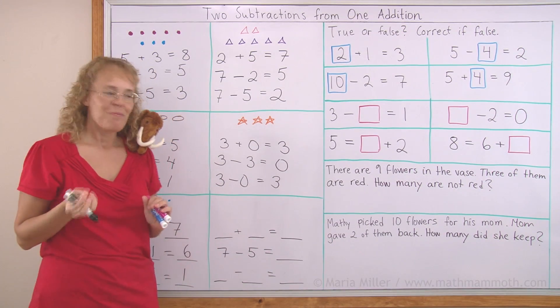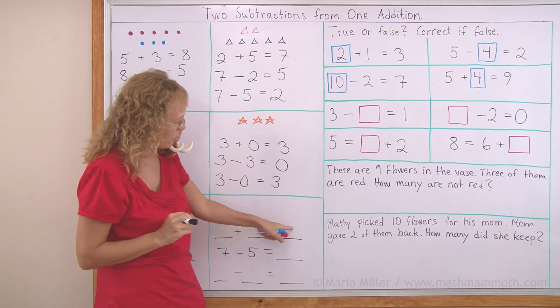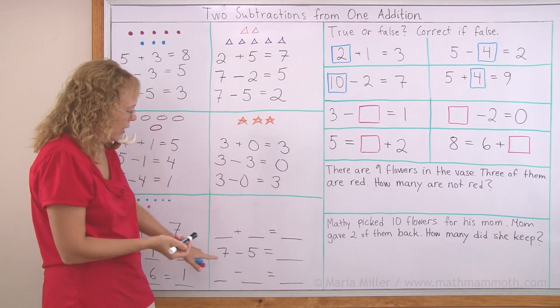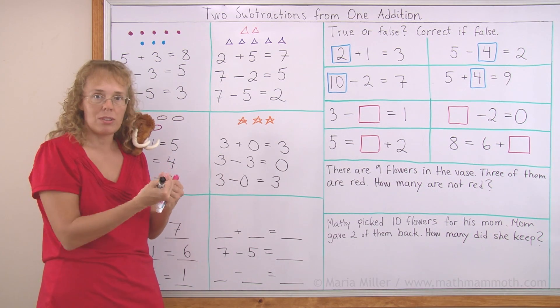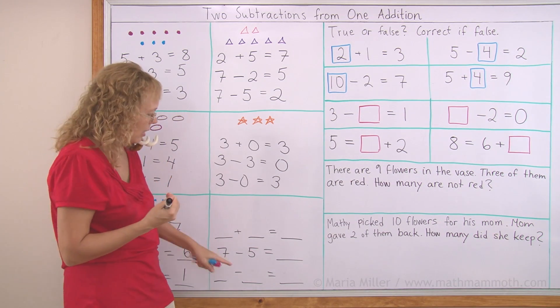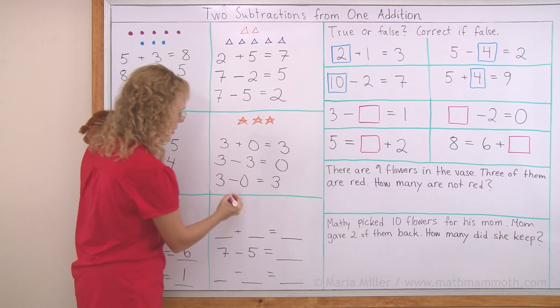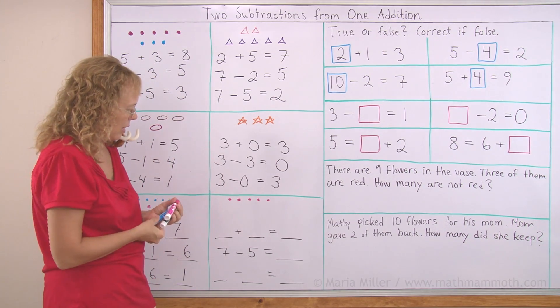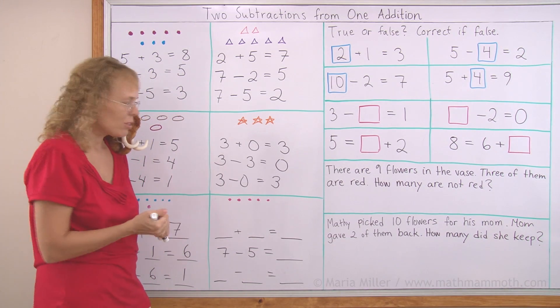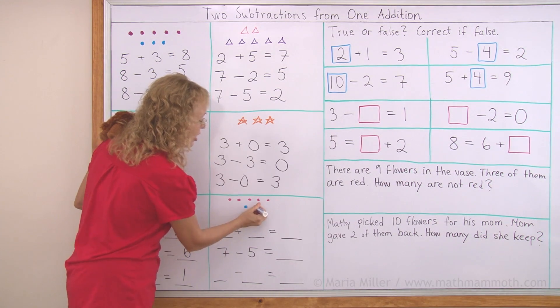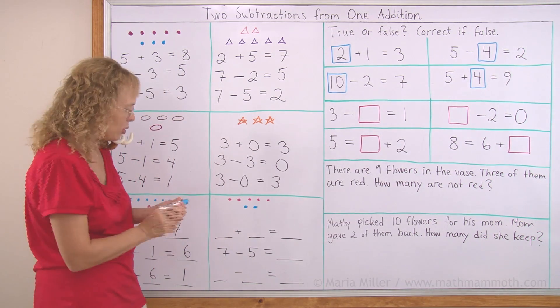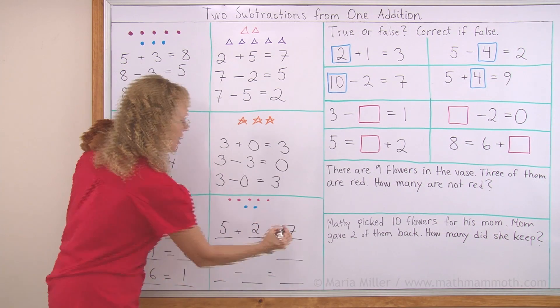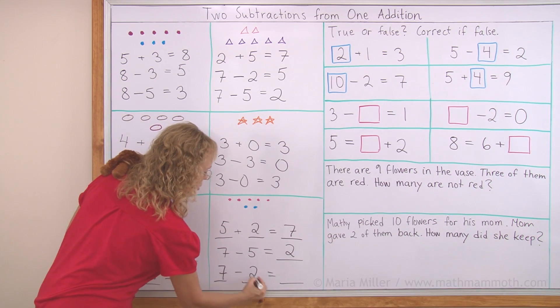Over here again I need to draw, but I don't know what my addition will be. Here is one of the subtractions: seven minus five. Now seven means there would be seven in total. Seven in the beginning, and five go away. So I could draw five. This would be the five going away. But there needs to be seven in total. So the other group has to be two. Five and two make seven. So my addition is five plus two equals seven. Then two here. And then here seven minus two equals five.